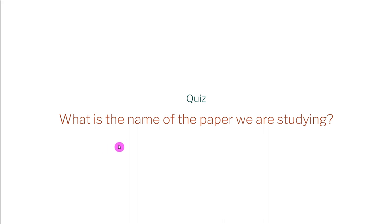So now I'll answer this question: what is the name of the paper we are studying? The name of the paper is 'The Essence of JavaScript.' That's what we're learning, and we're effectively implementing a part of the paper in homework eight.